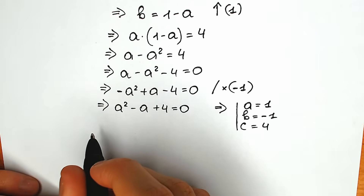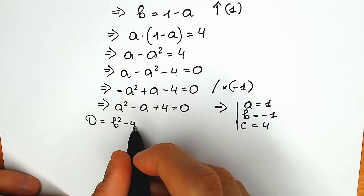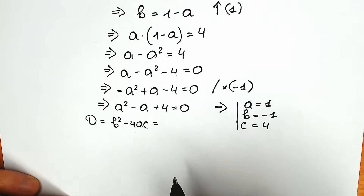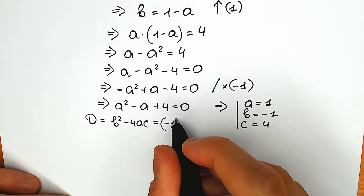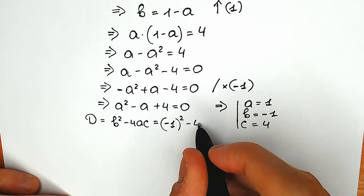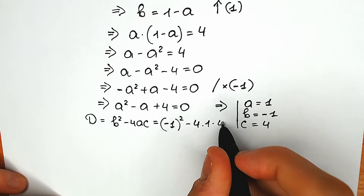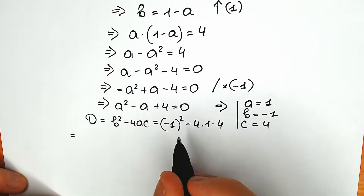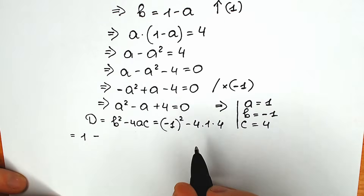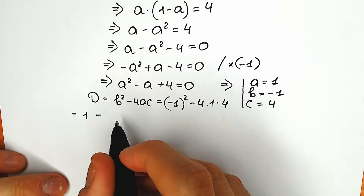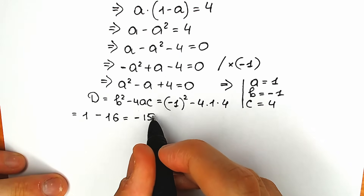Let's find our discriminant. The discriminant equals b² minus 4ac. Plugging in: we have (minus 1)² minus 4 times 1 times 4. So minus 1 squared equals 1, and 4 times 1 times 4 equals 16. As a result we have 1 minus 16, which gives us minus 15. Our discriminant is negative.